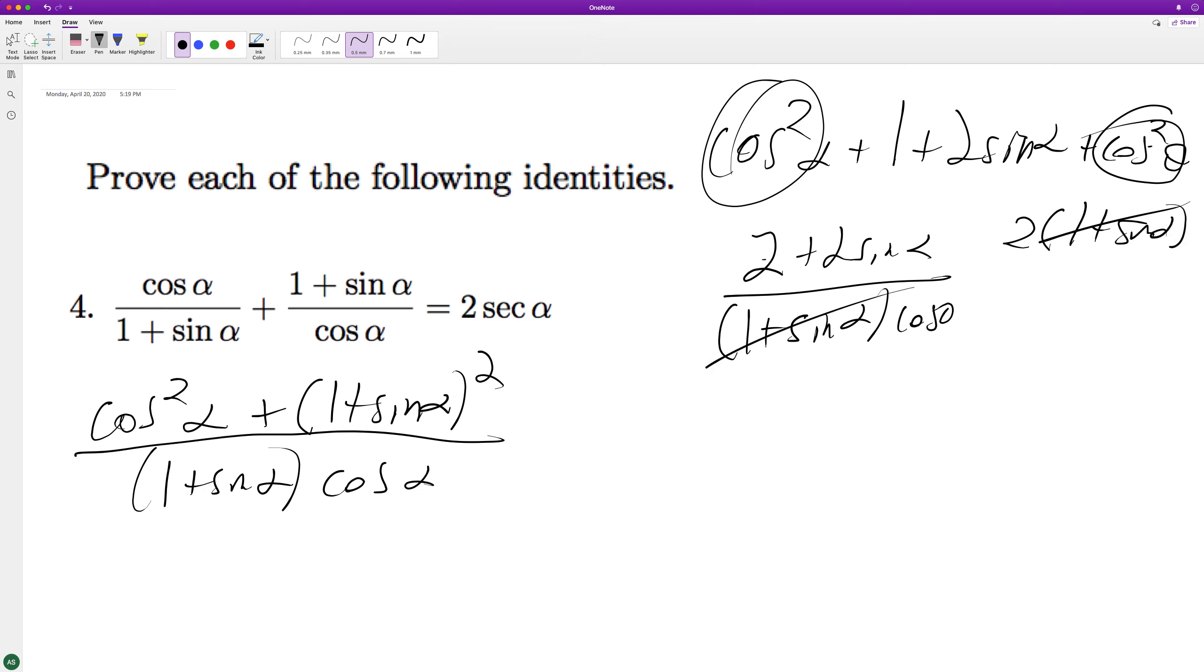Sorry about the mess, so that cancels out so we're just left with 2 over cosine alpha, which is the same thing as 2 secant alpha and that's it.